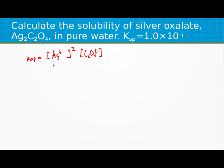In terms of S, for every silver oxalate that dissolves there's two of the silvers and there's just one of the oxalates.